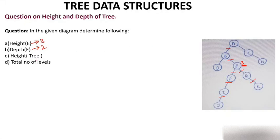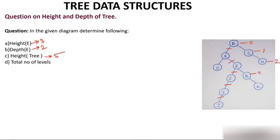The height of the tree is the number of edges from root to the maximum leaf. From root, the maximum path takes 1, 2, 3, 4, 5 edges to reach J — so the height of the tree is 5. Total number of levels: levels start from 0, then 1, 2, 3, 4, 5 — so total number of levels from 0 to 5 gives us 6 levels in total.